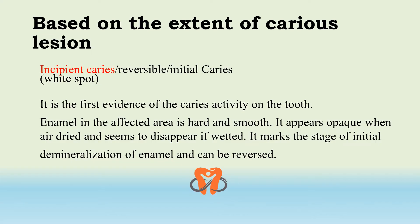Based on the extent of caries lesion, we have incipient caries — also called reversible or initial caries, known as a white spot. It is the first evidence of caries activity on the tooth enamel; the affected area is hard and smooth, appearing opaque when air dried and disappearing when wetted. A whitish patch visible on drying indicates the initial stage of demineralization. This stage can be reversed and marks initial demineralization of enamel.